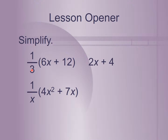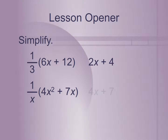Now we do 1 over x times 4x squared plus 7x. Multiplying by 1 over x is the same as dividing by x. So 4x squared times 1 over x — this x will cancel one of the x's, leaving just 4x. And then 7x times 1 over x — the x's cancel, leaving just 7.